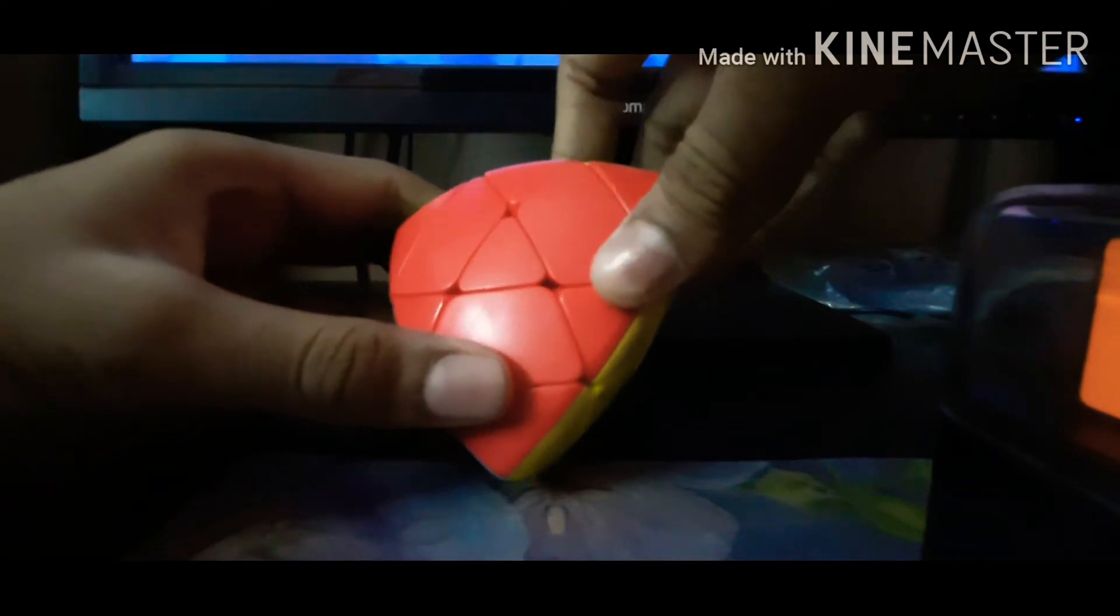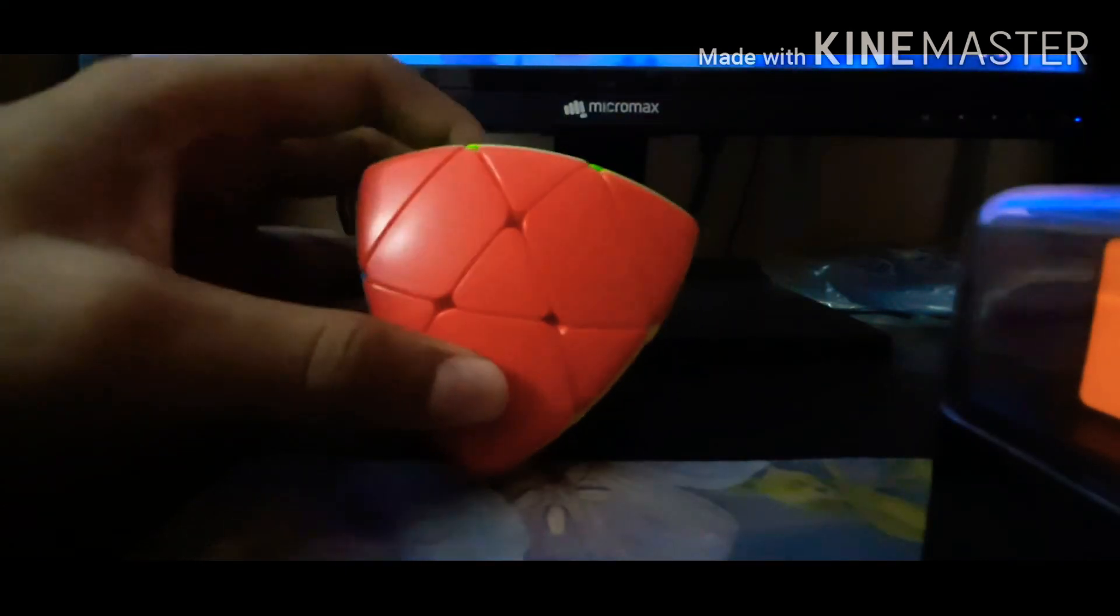So, the shades are weird. I mean, in the camera, it looks like red, but it's actually pink. This is much lighter, and this is also much lighter. So, let's do first turns. Okay, it turns. That's good.